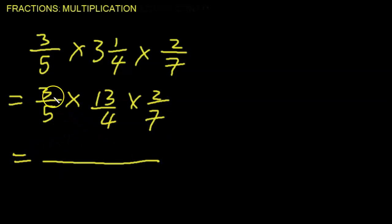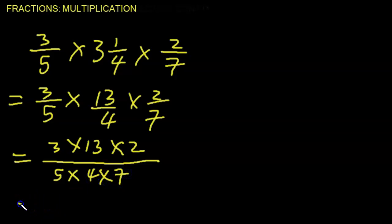So we're multiplying 3 fractions now. So again, numerator times numerator times numerator over denominator times denominator times denominator. So multiply straight across. So 3 times 13, that's what? 39. 39 times 2, that seems to be 78.